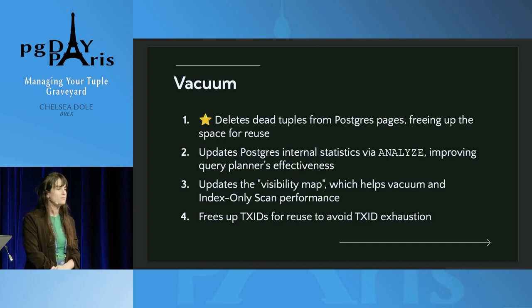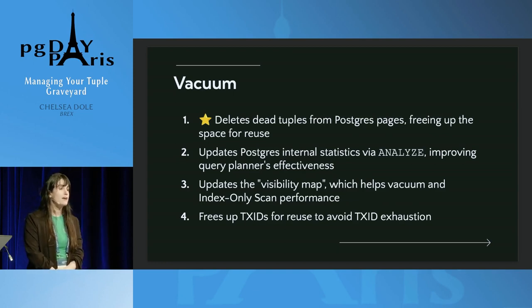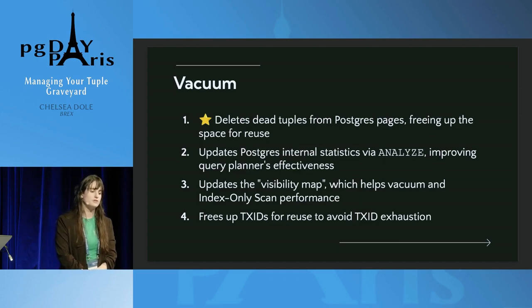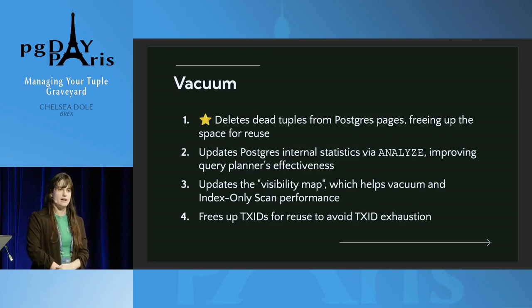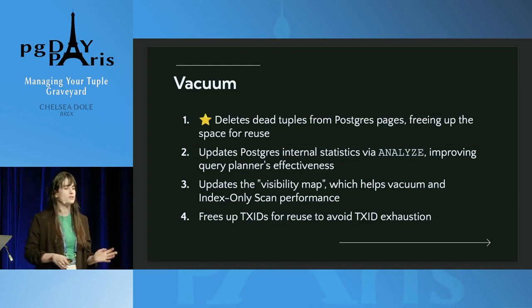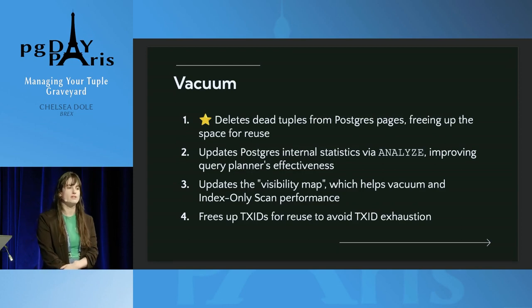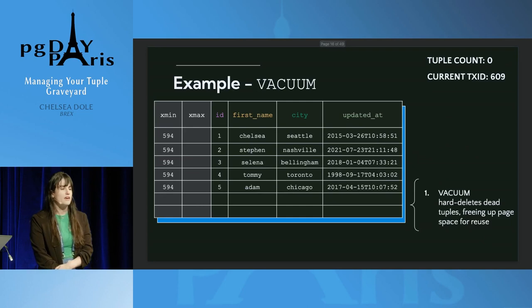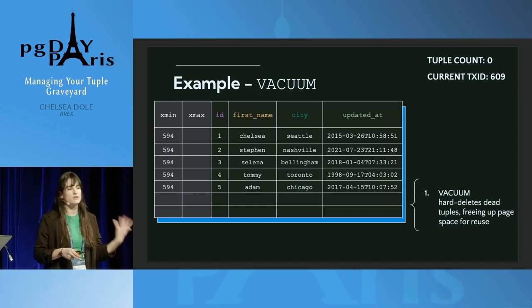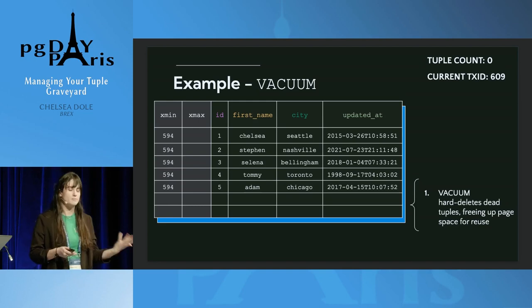Vacuum has a lot of tasks. The main usage is to delete dead tuples from Postgres pages, which frees up space for reuse. Auto vacuum will also update Postgres internal stats by running analyze at the same time, improving the query planner's effectiveness. It also updates the visibility map, which can be used for future vacuums and index-only scans. Finally, it frees up transaction IDs for reuse to avoid transaction ID exhaustion.